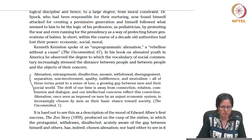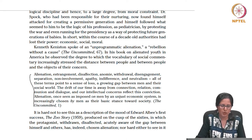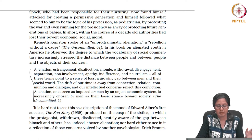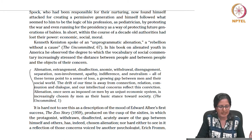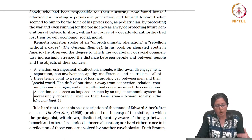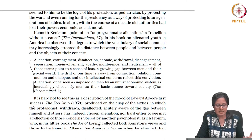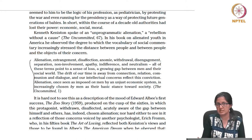Alienation, estrangement, disaffection, anomie, withdrawal, disengagement, separation, non-involvement, apathy, indifference, and neutralism — all of these terms point to a sense of loss, a growing gap between men and their social world. The drift of the time is away from connection, relation, communion, and dialogue. Alienation, once seen as imposed on men by an unjust economic system, is increasingly chosen by men as their basic stance towards society. As Keniston would say, this reflects the mood of Albee's Zoo Story.